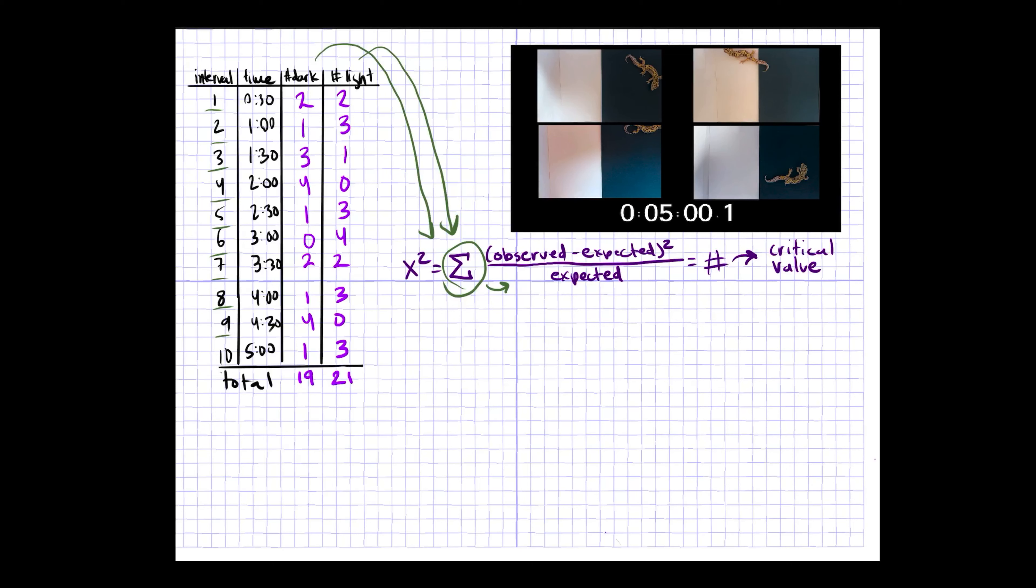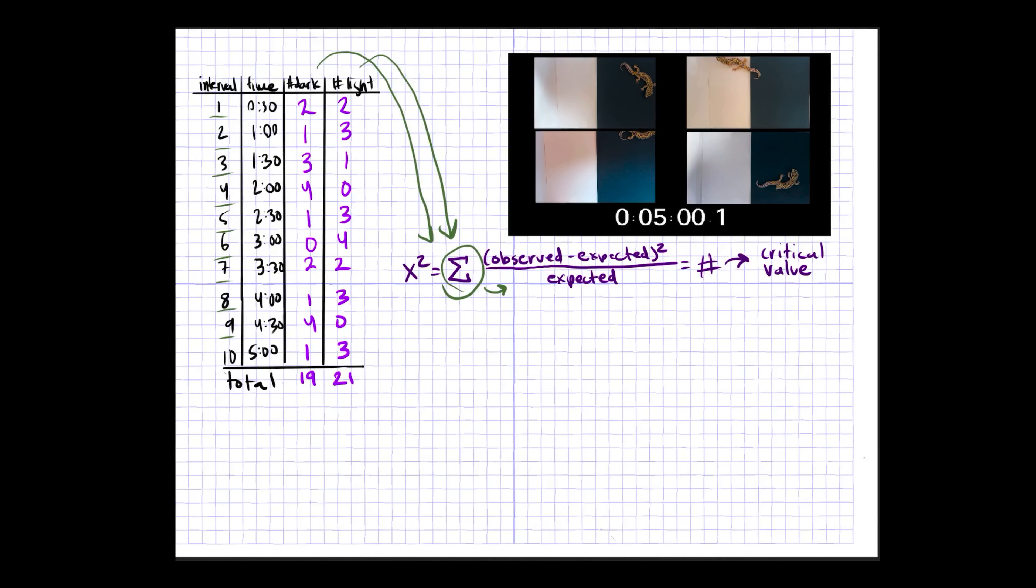Another way of writing this is x-squared, which is your chi-squared statistic, equals the total number of dark minus the expected total, squared, over the expected total. And remember, this is the expected total if there was no difference between the two groups, if they were the same.